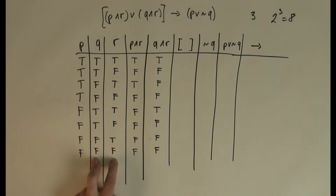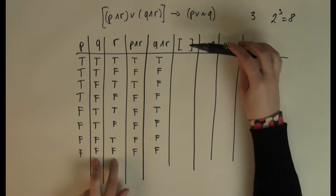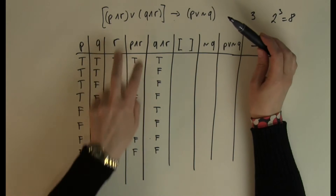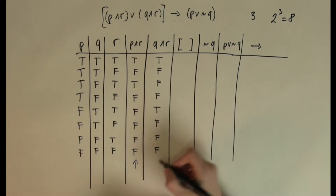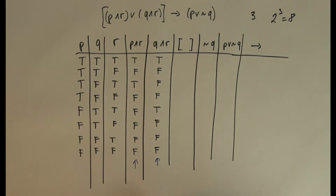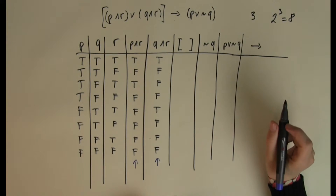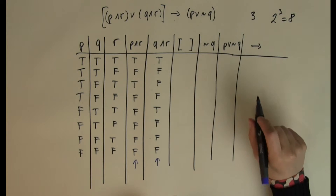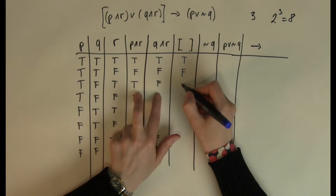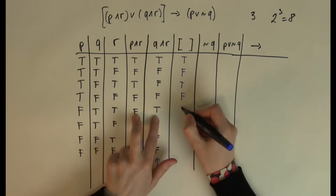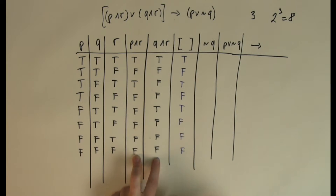Next I need to find the overall value of the square bracket, combining the P AND R and Q AND R columns together using OR. The OR is only false if both of them are false; in every other case OR returns true. The results are: true, false, true, false, true, false, false, false. So I now have the square bracket column.